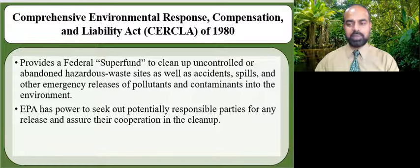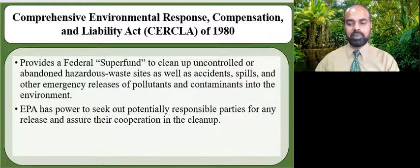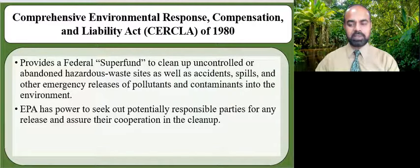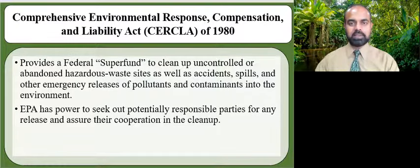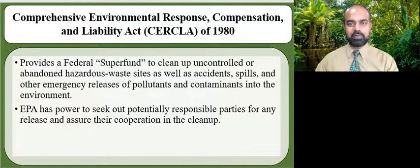EPA cleans up orphan sites when potentially responsible parties cannot be identified or located, or when they fail to act. CERCLA gives EPA the authority to act to clean up such sites. Through various enforcement tools, EPA obtains private party cleanup through orders, consent decrees, and other small-party settlements. EPA also recovers costs from financially viable individuals and companies once a response action has been completed. EPA is authorized to implement the act in all 50 states and U.S. territories. The name Superfund is important because it gathers a pool of money from taxpayers to fund this cleanup.